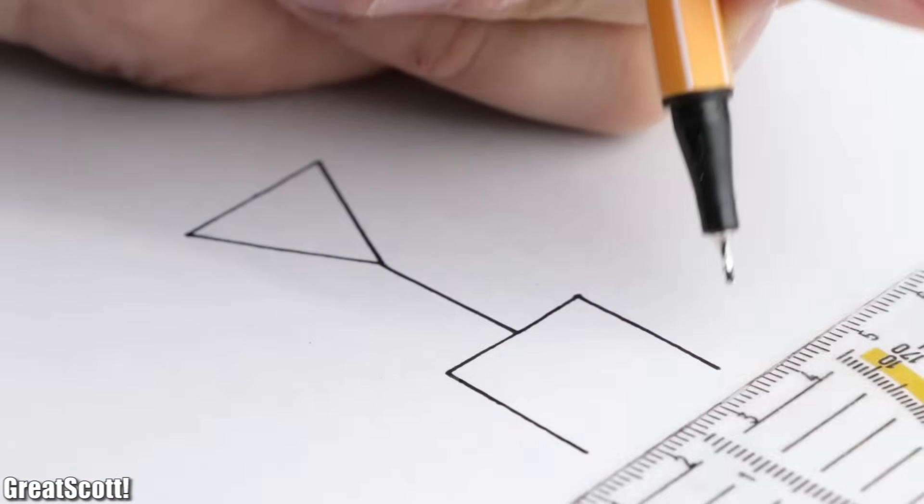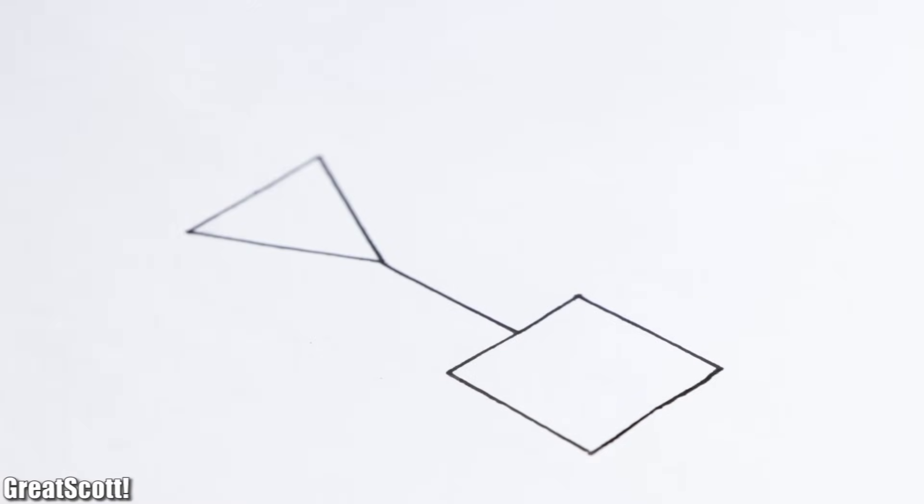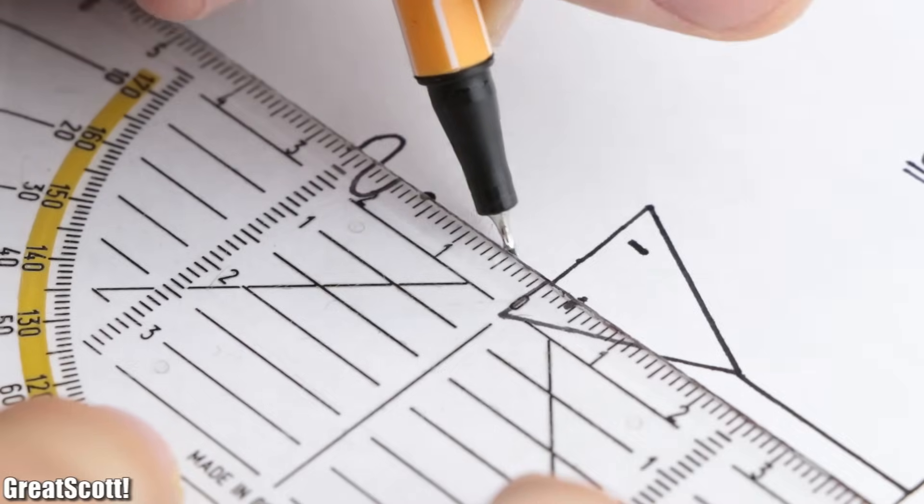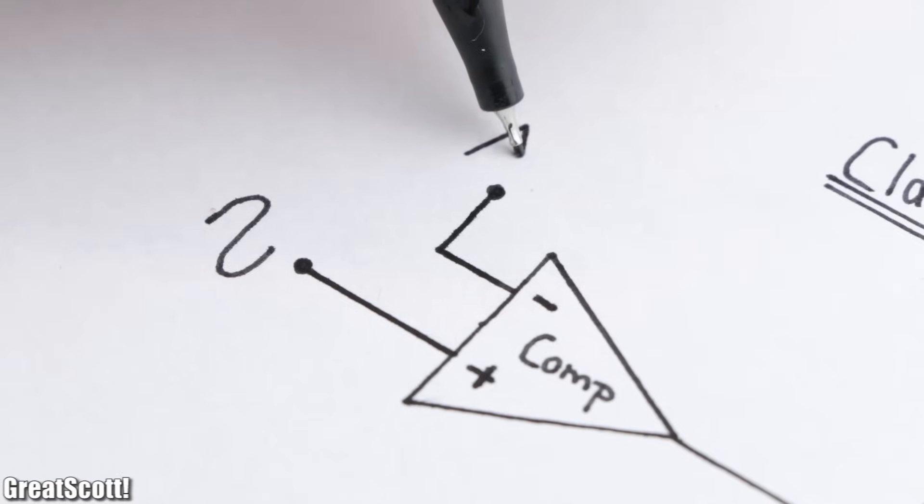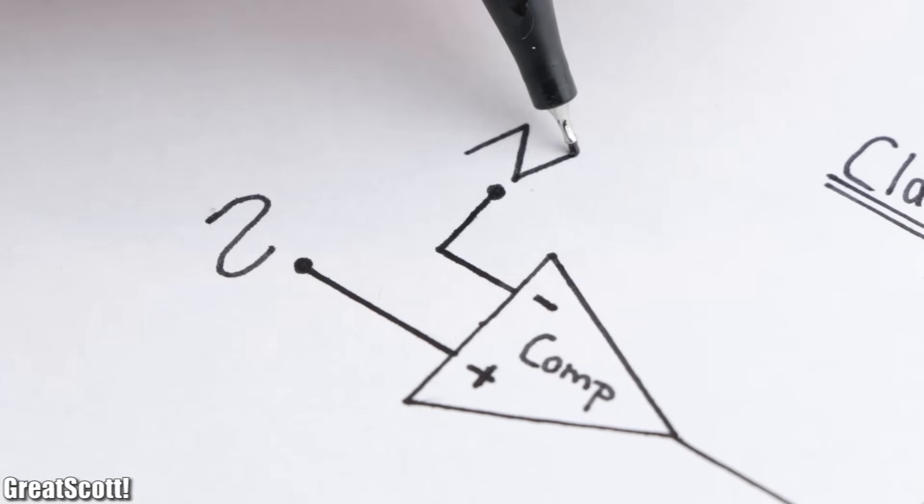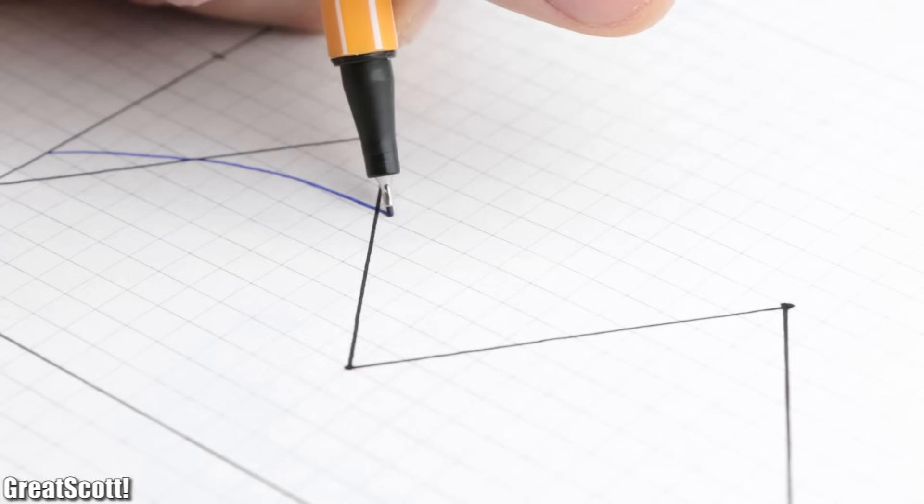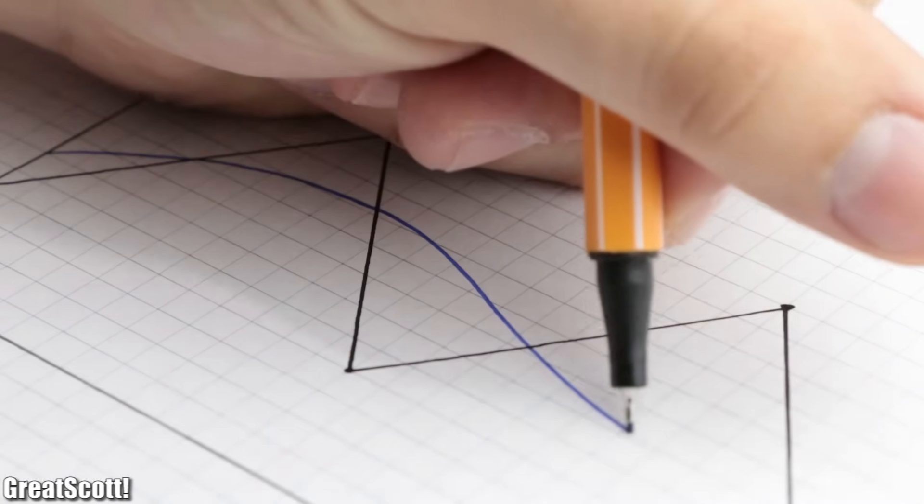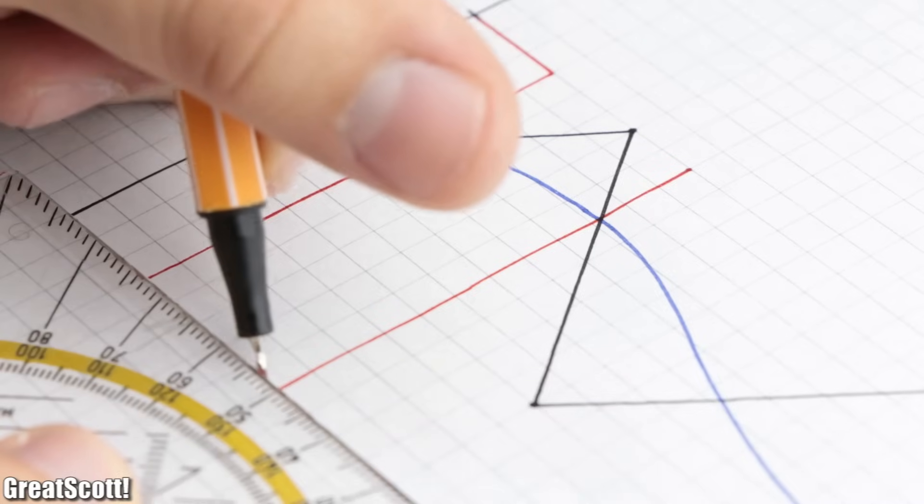First off, let's have a look at the simplified functional block diagram of a class D amp. On the left side, we got our audio signal which is connected to the non-inverting input of a comparator. The inverting input however, gets connected to a triangle wave with a frequency of above 200 kilohertz. Now whenever the voltage of our audio signal is higher than the triangle voltage, the output of the comparator gets pulled high and vice versa.